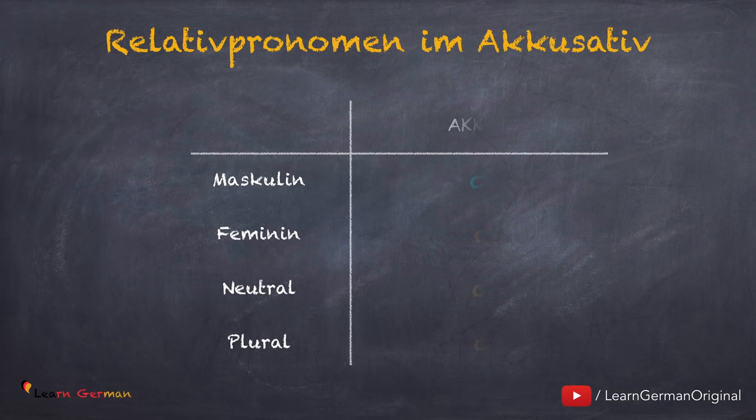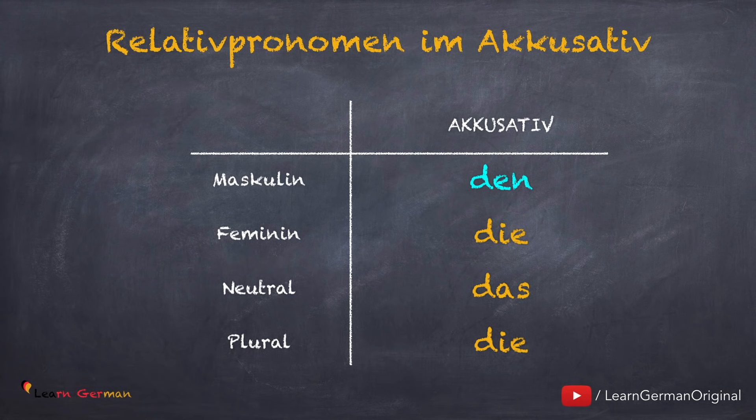So, hier ist eine Liste von Relativpronomen im Akkusativ. Wie gesagt, nur der maskuline Artikel ist anders als die Artikel im Nominativ. Also: das Relativpronomen für Akkusativ Maskulin ist den, für Feminin die, für Neutrum das, und für Plural die.